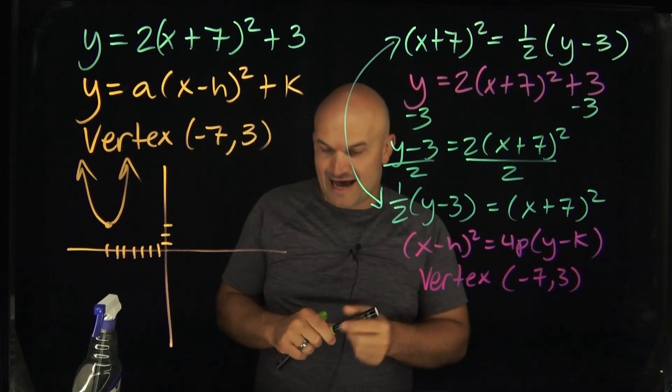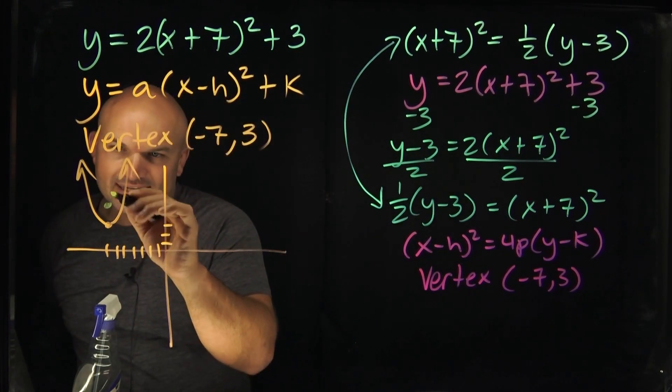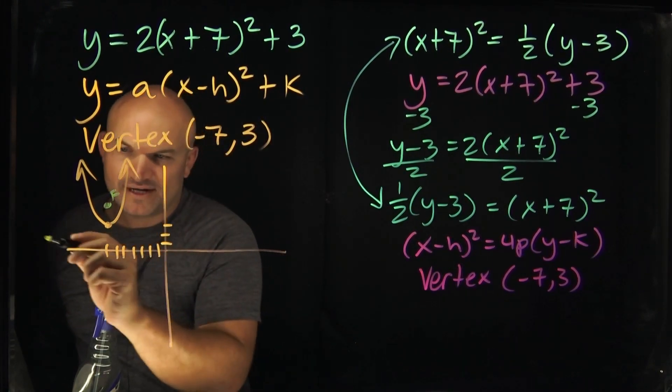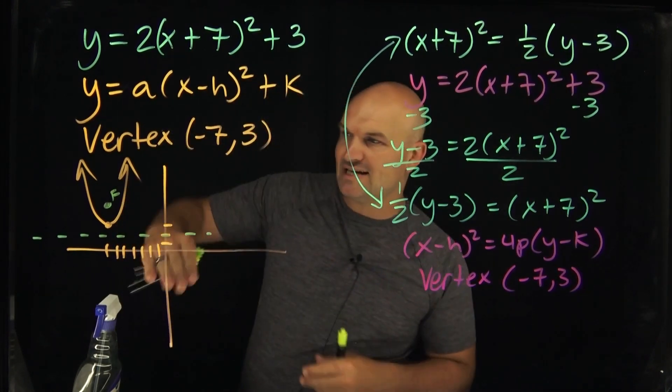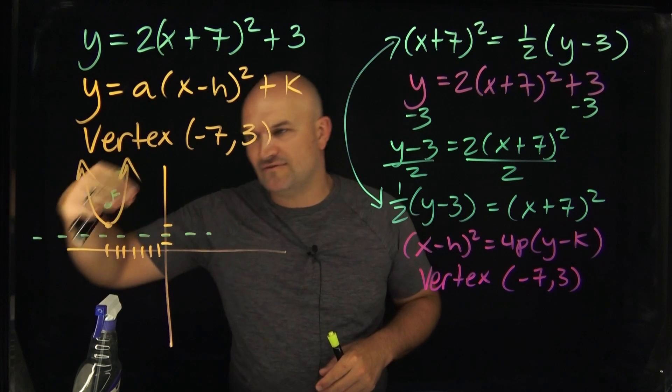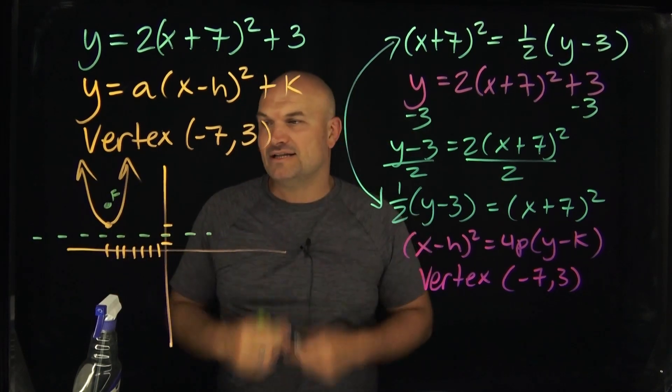Vertex is exactly the same. The only added elements now that we're going to have here is we're going to have this point that's inside of the parabola, which we're going to call our focus. And then we're going to have the point on the outside, which we're going to call our directrix. Now, the distance from the vertex to our focus, as well as the distance from the vertex to our directrix, is actually exactly the same.